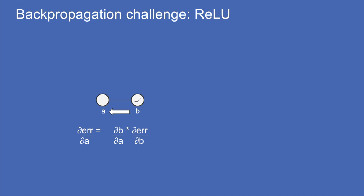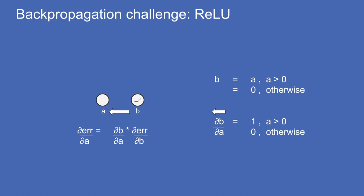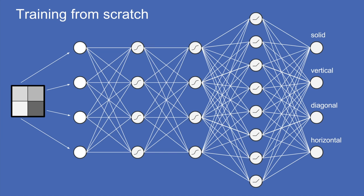Another element we've used is the rectified linear unit. To figure out how to back-propagate, we write the relation: B equals A if A is positive, otherwise zero. Piecewise, taking the derivative gives dB/dA as either 1 if A is positive, or 0. With all of these little back-propagation steps and the ability to chain them together, we can calculate the effect of adjusting any given weight on the error for any given input.